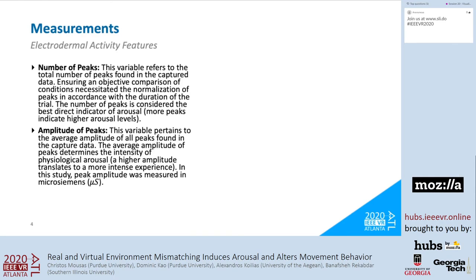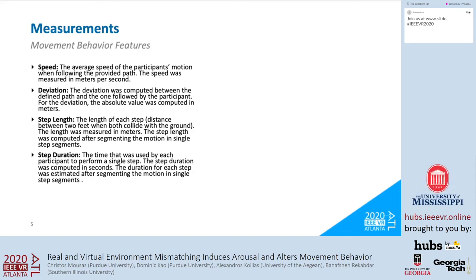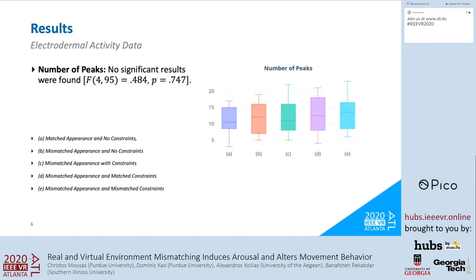Electrodermal activity and movement behavior data were collected to investigate possible variations in participants' behavior. To record electrodermal activity, we identified and calculated the number of peaks and their average amplitudes throughout the experiment, enabling examination of both frequency and intensity of physiological arousal. A motion capture system recorded the movement behavior of participants. To obtain global input, we captured the average speed and average deviation from the provided path. To obtain local input, we computed step length and step duration. A one-way ANOVA was used to analyze the data using the five conditions as the independent variable.